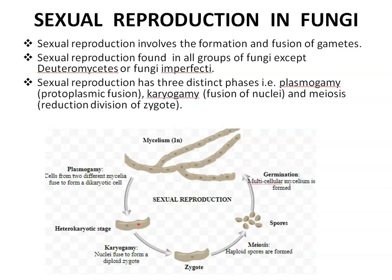Sexual reproduction in fungi involves the formation and fusion of gametes. Sexual reproduction is found in all groups of fungi except Deuteromycetes, also known as Fungi Imperfecti — because here no sexual reproduction occurs, only asexual reproduction. Sexual reproduction has three distinct phases: plasmogamy, meaning fusion of protoplasm; karyogamy, meaning fusion of nuclei; and meiosis, meaning reduction division of the zygote. First plasmogamy occurs, followed by karyogamy, then meiosis produces spores called meiospores, which germinate to form a new mycelium.